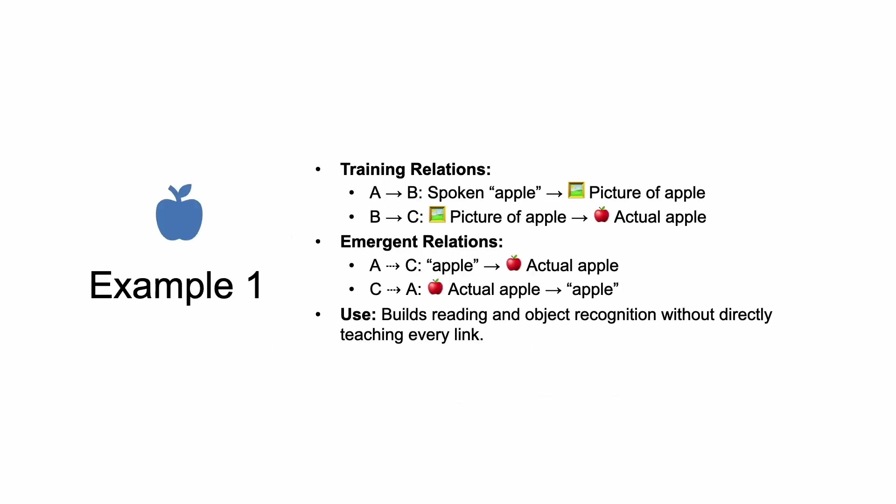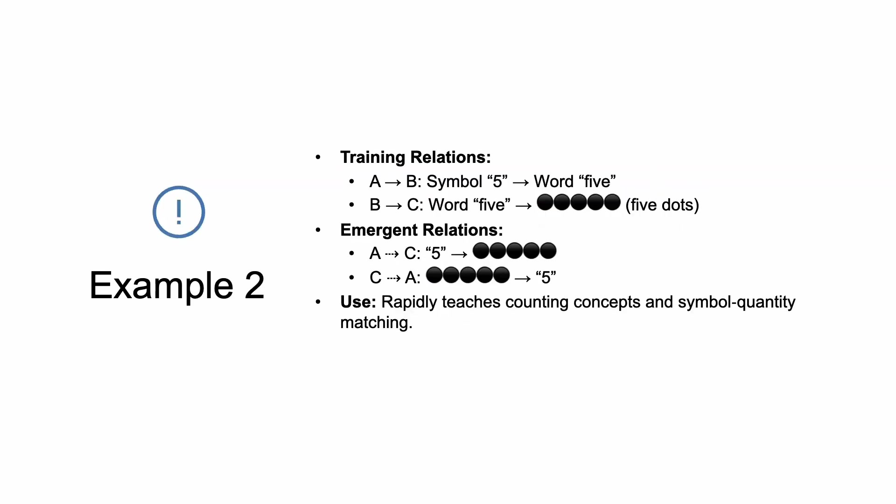Another example for training relations: you say the spoken word 'apple,' train them to select a picture of an apple, then show a picture of an apple and they select the actual apple. You should get emergent relations — when you say 'apple' they should be able to pick the actual apple, and when you show them an actual apple they should be able to say 'apple.' You get natural learning without having to work at a table with DTT.